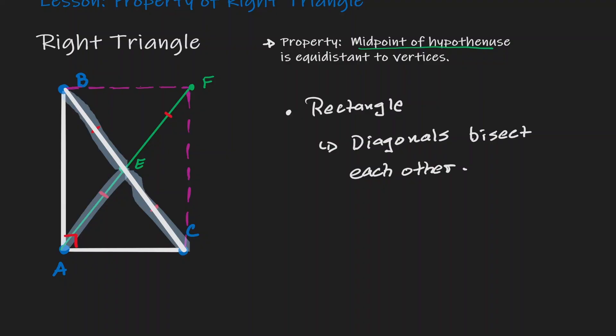So what are the distances from the center of the hypotenuse to the vertices? Notice that those are the line segments of BE, EA, and EC.